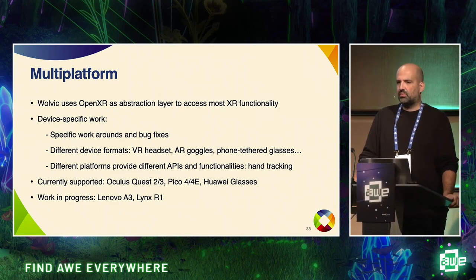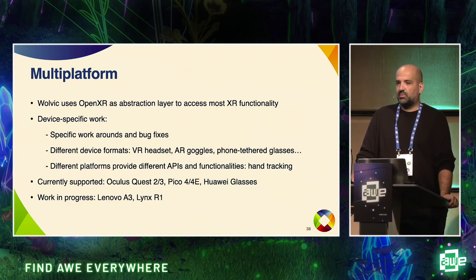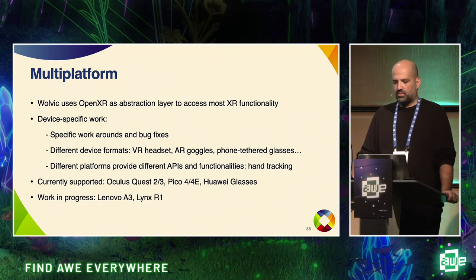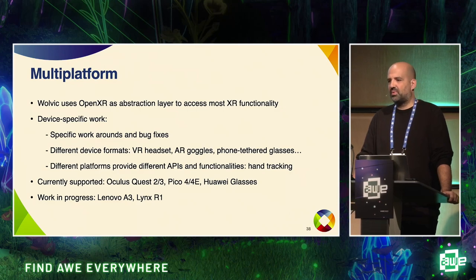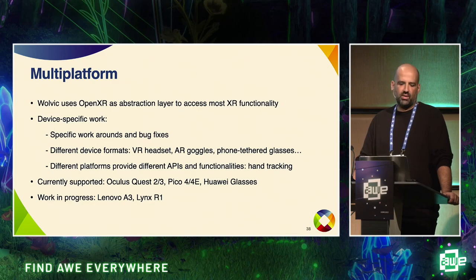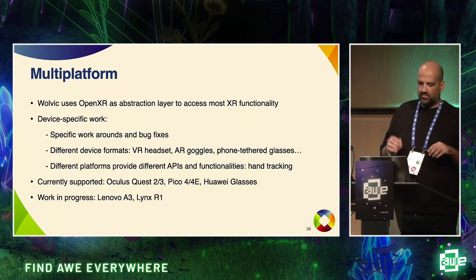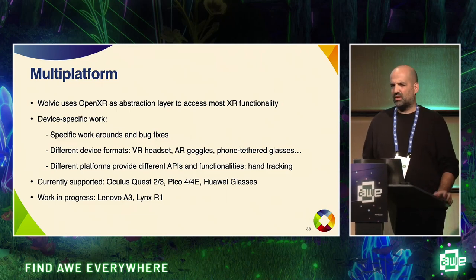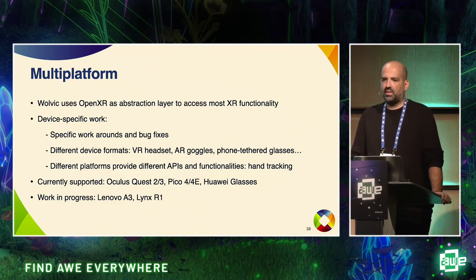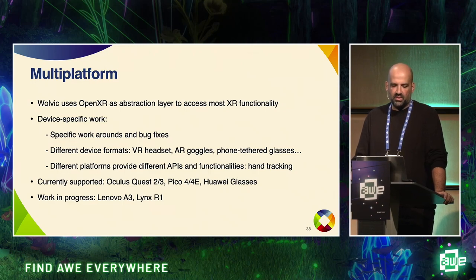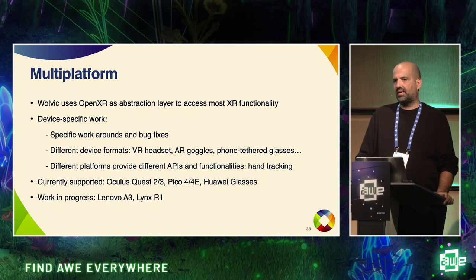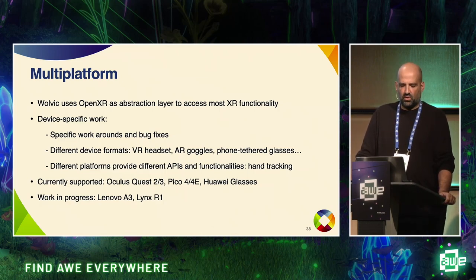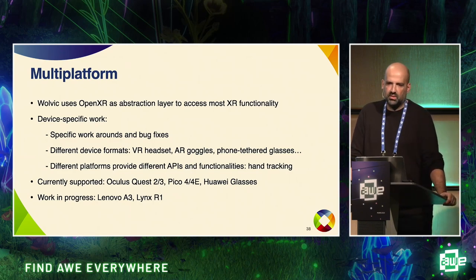Another important feature of WolvIK is that it is multi-platform — not focusing on just one or two devices, but trying to support as many as possible through the OpenXR abstraction layer. There's still quite a lot of device-specific work: the OpenXR driver of each platform doesn't do exactly the same things, and the form factor — screen size, resolution, field of view, hand tracking — all have subtle differences you need to adjust. Currently we officially support the Oculus Quest 2 and 3, the latest Pico devices, the Huawei VR Glasses, and are about to release packages for the Lenovo VRX and the Lynx R1.